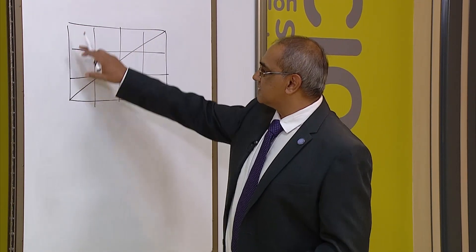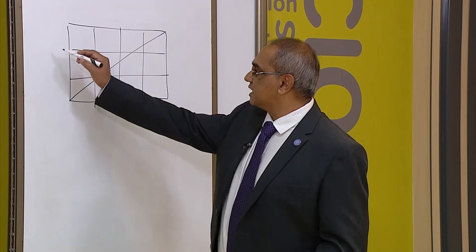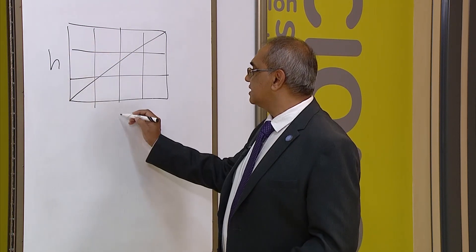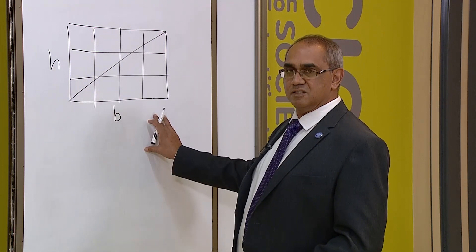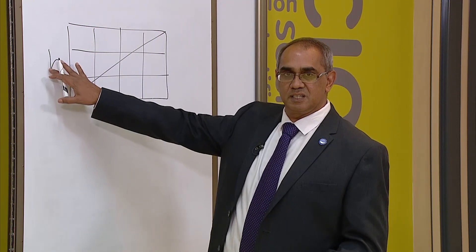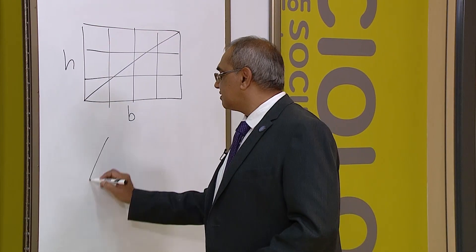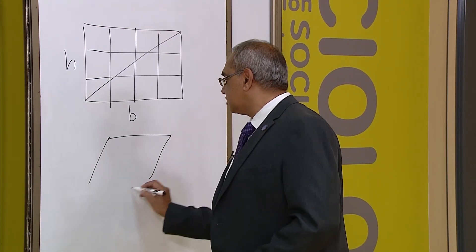So what is the area of the rectangle? It's length times breadth, which is again we say this is going to be the height and this is going to be the base. So if that is the area of the rectangle, then this is half base times height.